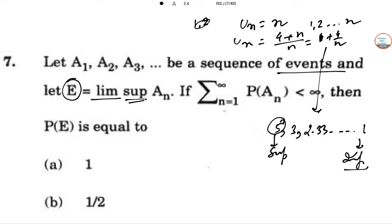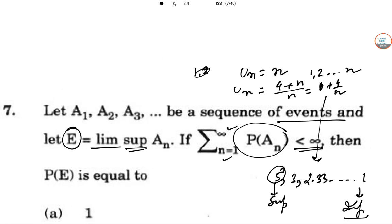So summation from n equals 1 to infinity of P(Aₙ) is less than infinity, then probability of E equals 1. So there is a lemma called the Borel-Cantelli lemma. So what is that lemma about? Let me explain that. A lemma is a type of postulate. Okay. So let me write it.